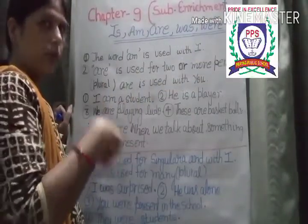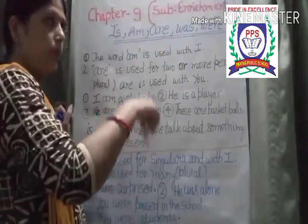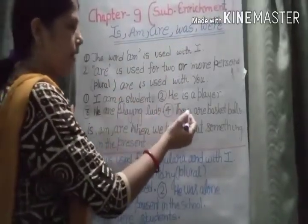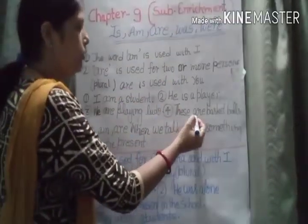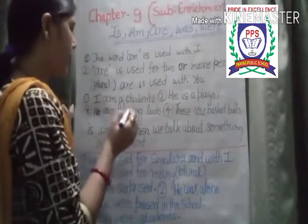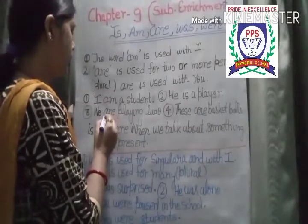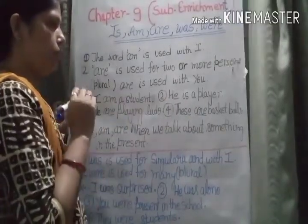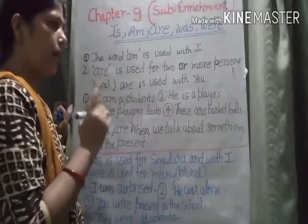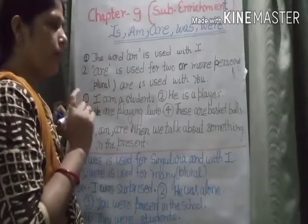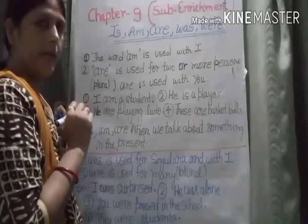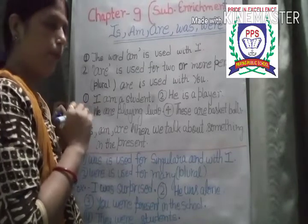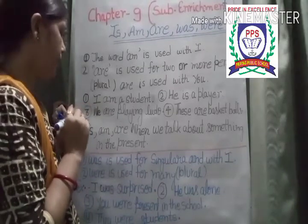These pass ke liye hota hai, those door ke liye. Ye ya wo — lekin ye plural hota hai, isliye yahan pe 'are' ka use hua. These are basketballs. 'These' hamara plural hai, isliye 'are' ka use hoga.